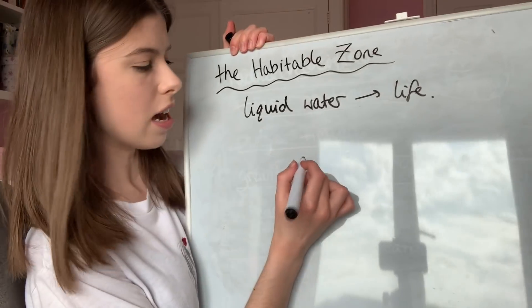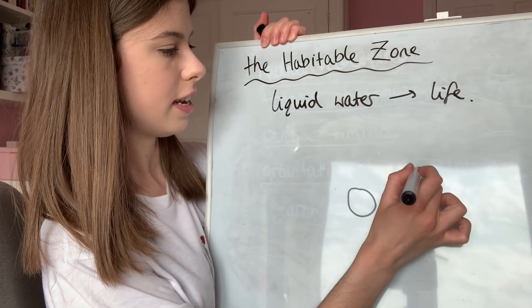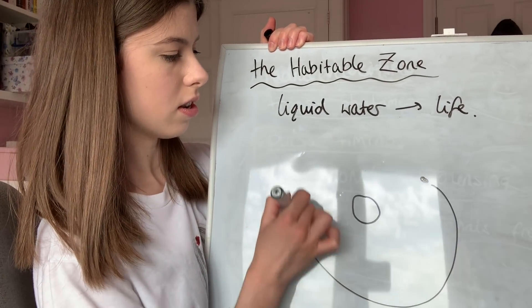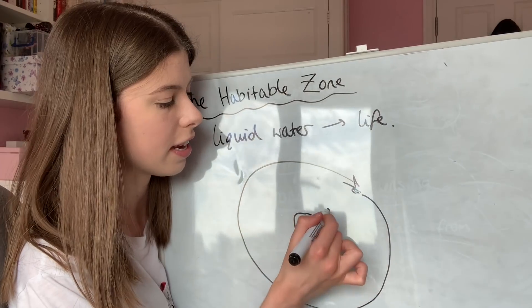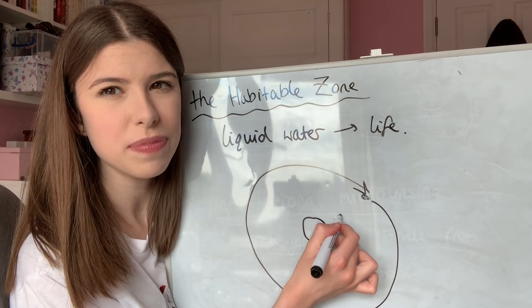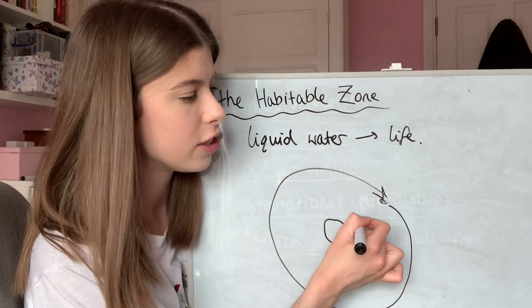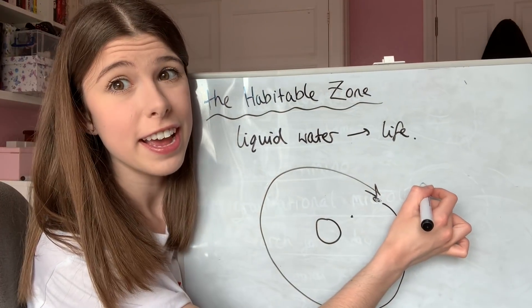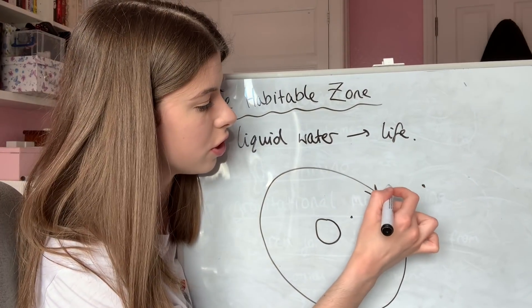Now imagine an exoplanet in orbit around a star. If the exoplanet is close to the star, it's going to be very, very hot. If the exoplanet is far away from the star, it's going to be very, very cold. Now there is a region...